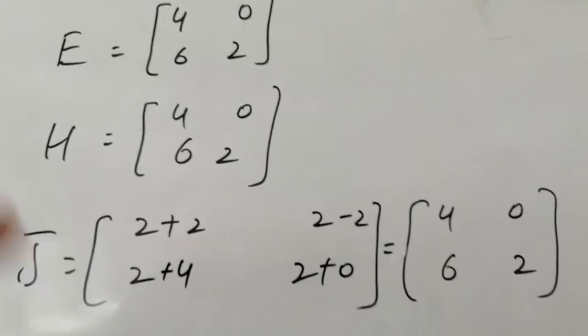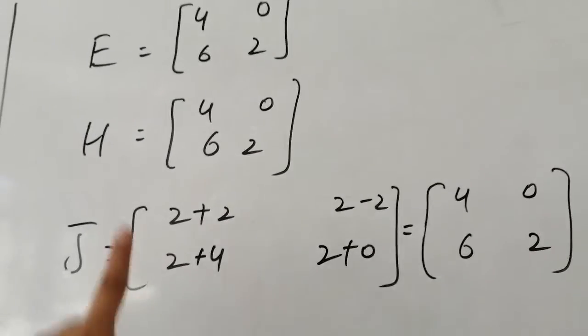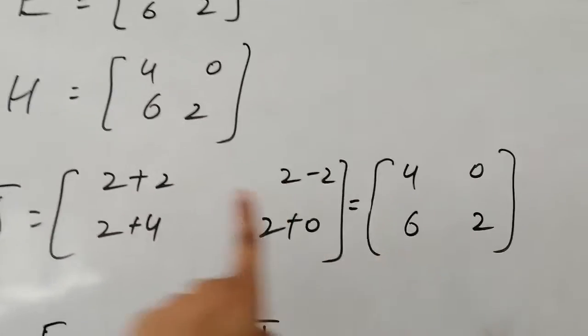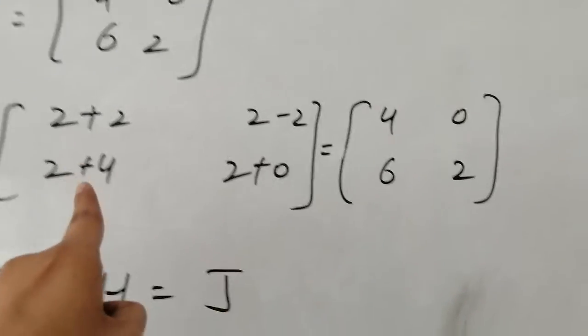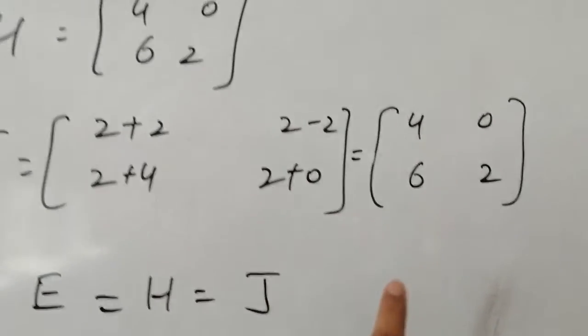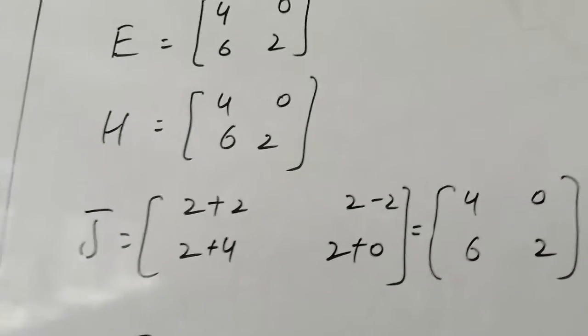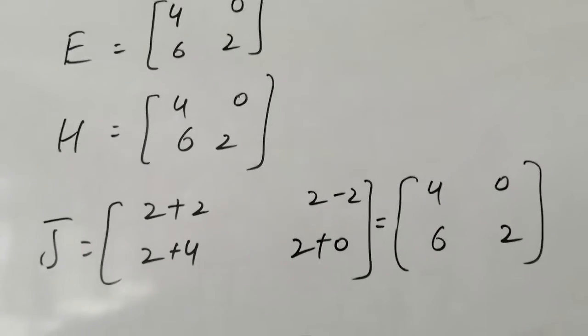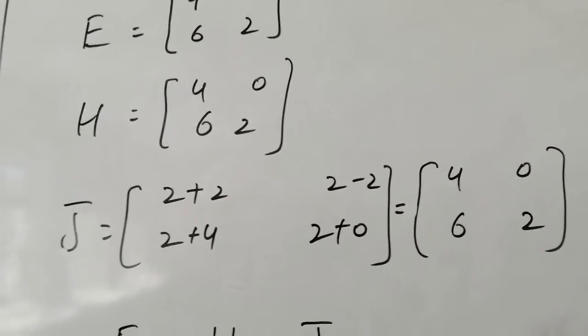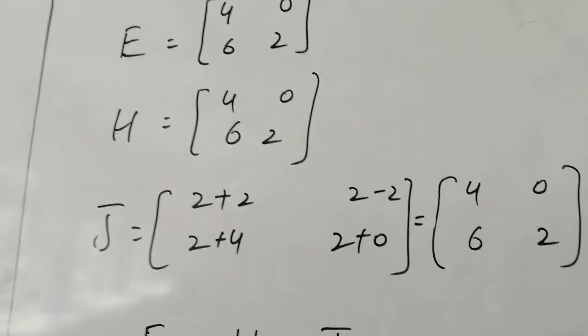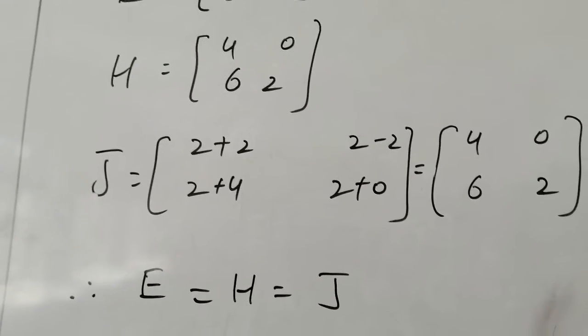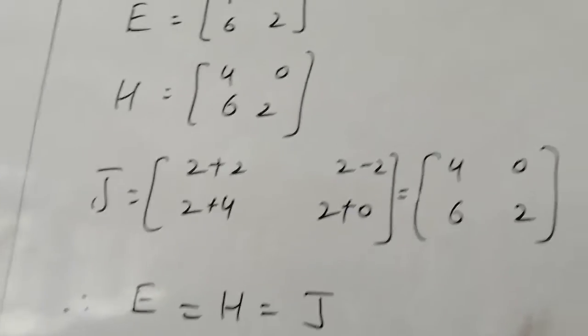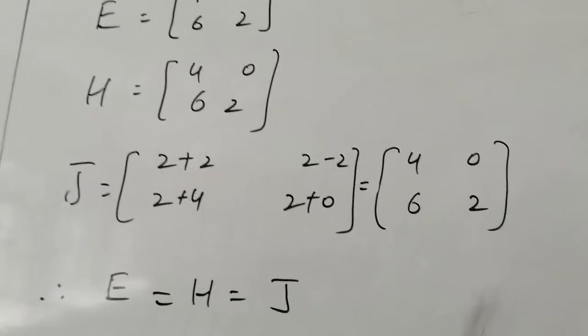After that, we have to see if the corresponding entries are the same. So you can see the addition. I added 2 and 2. What happened? 4. Then 2 plus 4 is 6, and 2 added to 0 is 2. Now you can see that the first entry is the same, the second entry is the same, the third entry is the same. Then there is 6 and then there is 2. The entire entries are equal. So what we have here? E, H and J are equal. Because the first thing we have seen is the order, and the second thing we have seen is corresponding entries are the same.